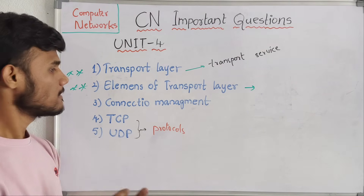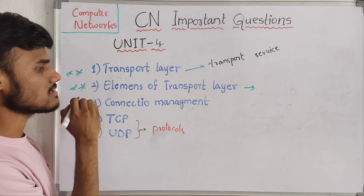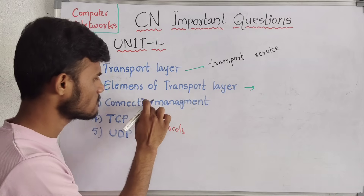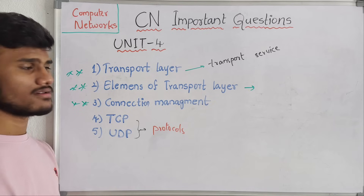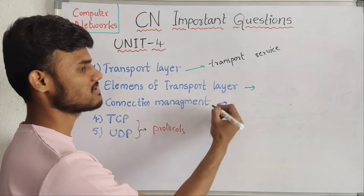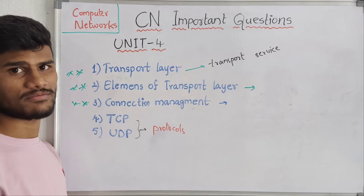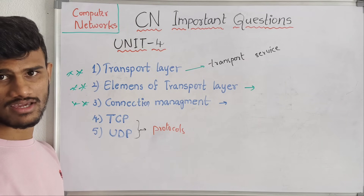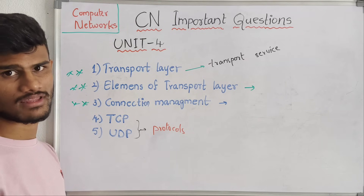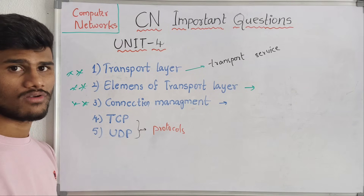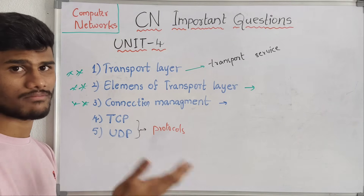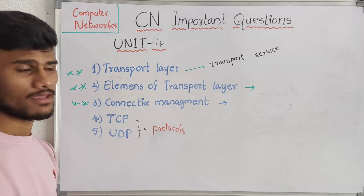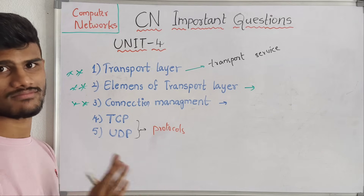Then next we have elements of transport layer — an important question. What are the elements of the transport layer? Explain the element types of the transport layer. Then next we have connection management. In connection management we have three types: synchronization, acknowledgement and synchronization, and acknowledgement — these three types need to be explained.